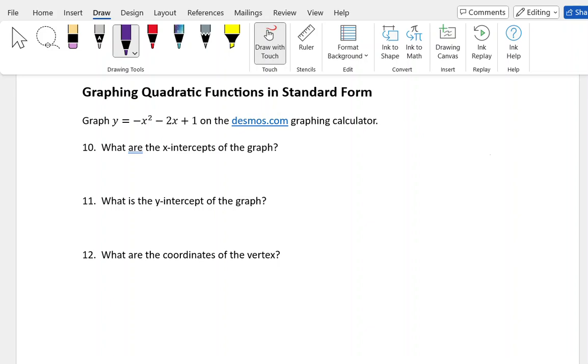In this video we're going to talk about how to graph quadratic functions in standard form. Standard form is also known as y = ax² + bx + c form, which is different from vertex form which had the parentheses. We're going to start by looking at a graph of y = -x² - 2x + 1 on the Desmos.com graphing calculator.